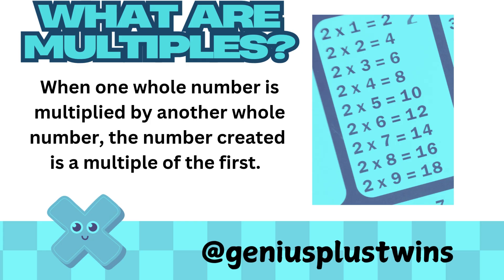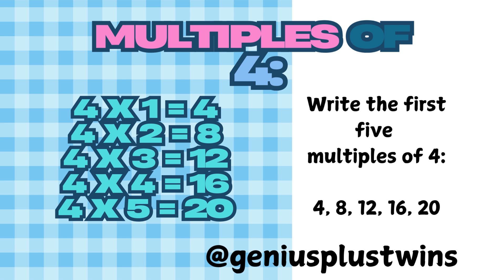Now let's talk about multiples. Multiples are what we get when we multiply a number by a whole number — think of it as skip counting. When we multiply one whole number by another whole number, the number created is a multiple of the first. For example, to find the multiples of 4, you simply skip count by 4s: 4, 8, 12, 16, and 20. Those would be the first five multiples of 4.